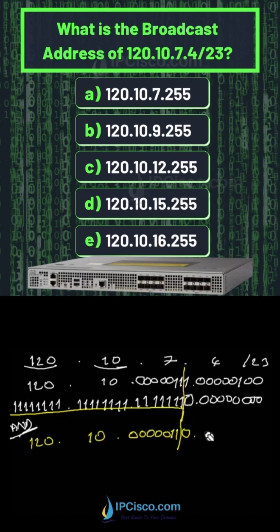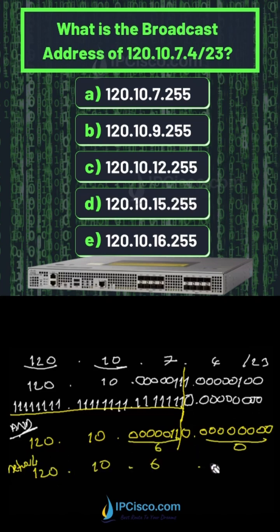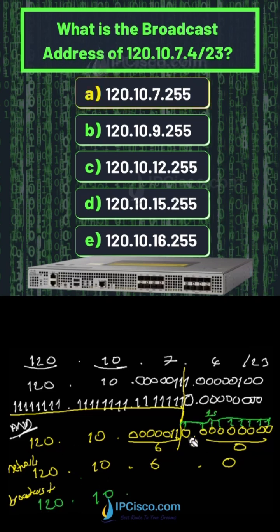As you can see here, all the bits are zero. When we change these zeros with ones, we will find the broadcast address of this IP address.